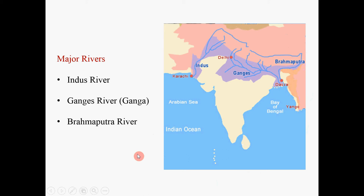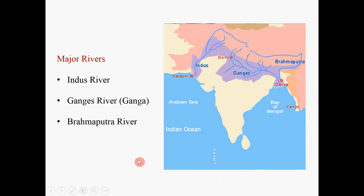Major rivers. There are rivers of all different sizes in South Asia, but let's focus on the three major rivers: the Indus River, the Ganges River, and the Brahmaputra River. They all originate from the Tibetan Plateau. The Indus River is 1,800 miles long and is the cradle of indigenous cultures in South Asia.